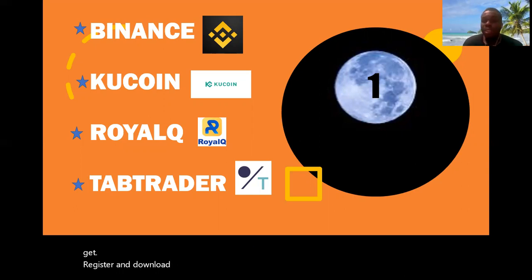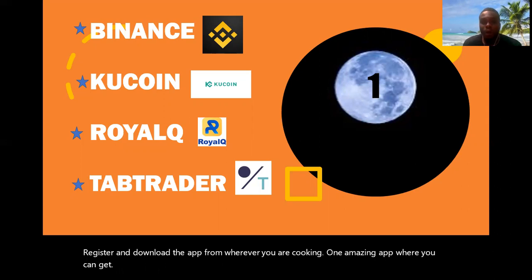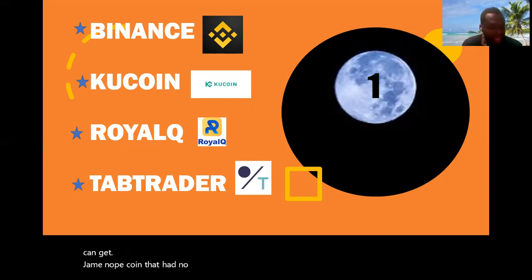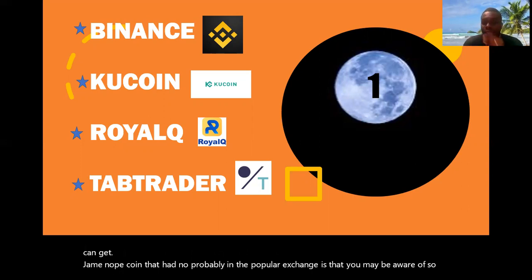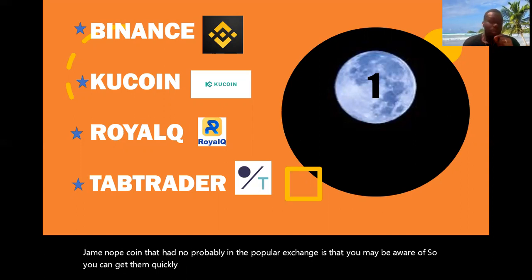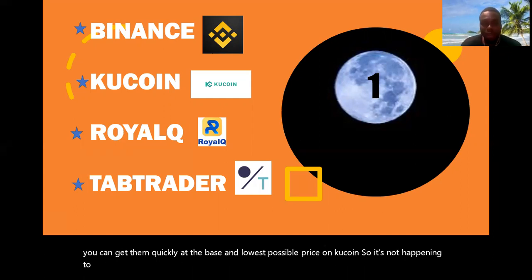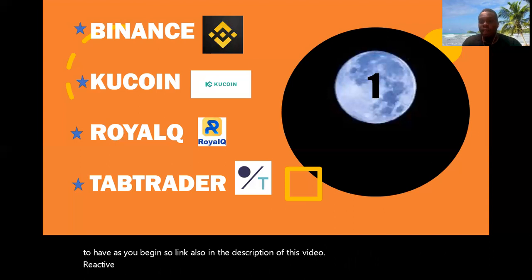KuCoin is one amazing app where you can get gem coins — coins that are not on popular exchanges that you may be aware of. You can get them quickly at the best and lowest possible price from KuCoin. It's one app you need to have as we begin, and the link is also in the description of this video.